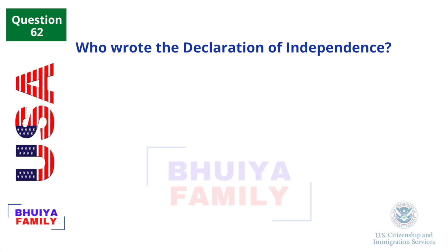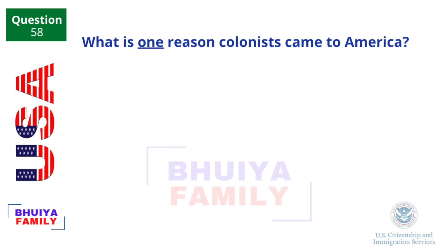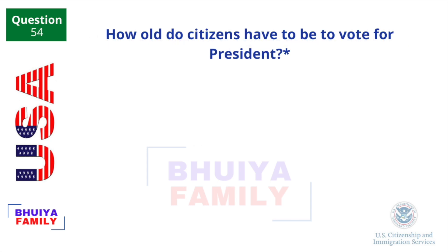Who wrote the Declaration of Independence? Thomas Jefferson. What is one reason colonists came to America? Freedom. How old do citizens have to be to vote for President? 18 and older.